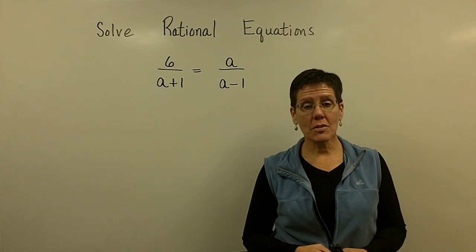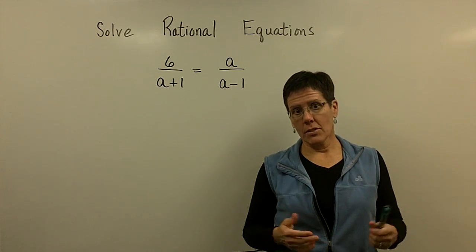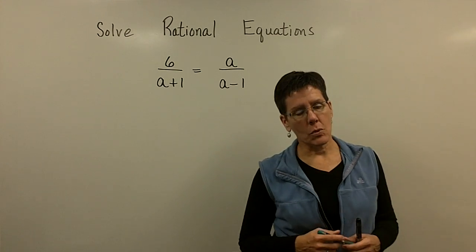Sometimes rational equations have two solutions because when you've cleared the denominators and get ready to solve the problem, you have an x squared term in them. Or in this case, it's going to be an a squared term.